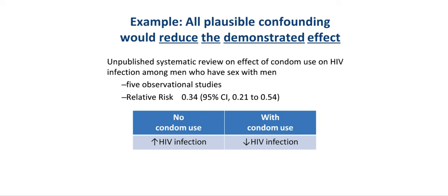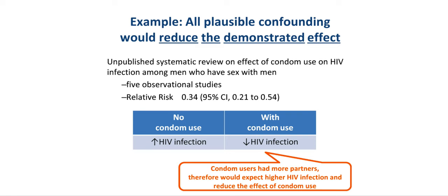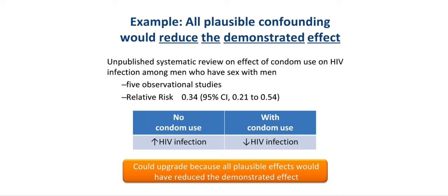Another example comes from an unpublished systematic review addressing the effect of condom use on HIV infection among men who have sex with men. The pooled effect estimate from five eligible observational studies was a relative risk of 0.34 in favor of condom use compared to no condom use. Two studies that examined the number of partners found that condom users were more likely to have more partners, but did not adjust for this confounding factor in the analysis. Considering the number of partners would, if anything, strengthen the effect estimate in favor of condom use.